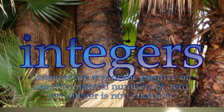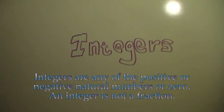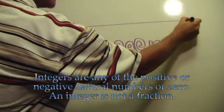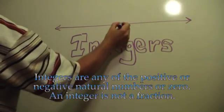Integers. Integers are any of the positive or negative natural numbers or zero. An integer is not a fraction.